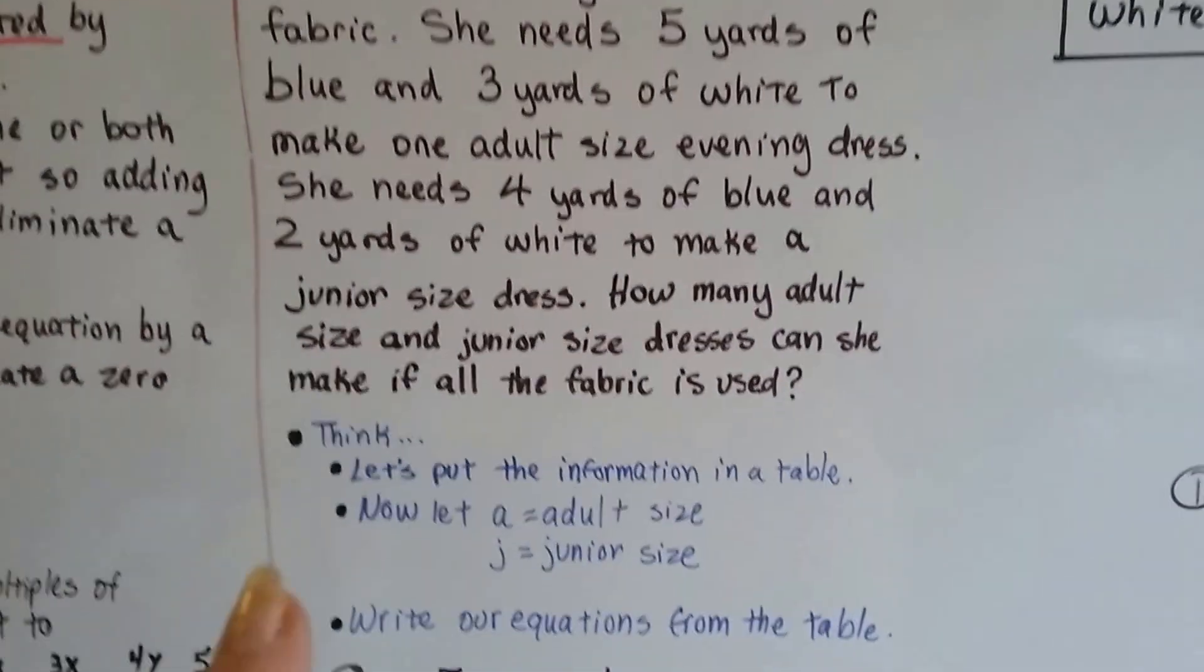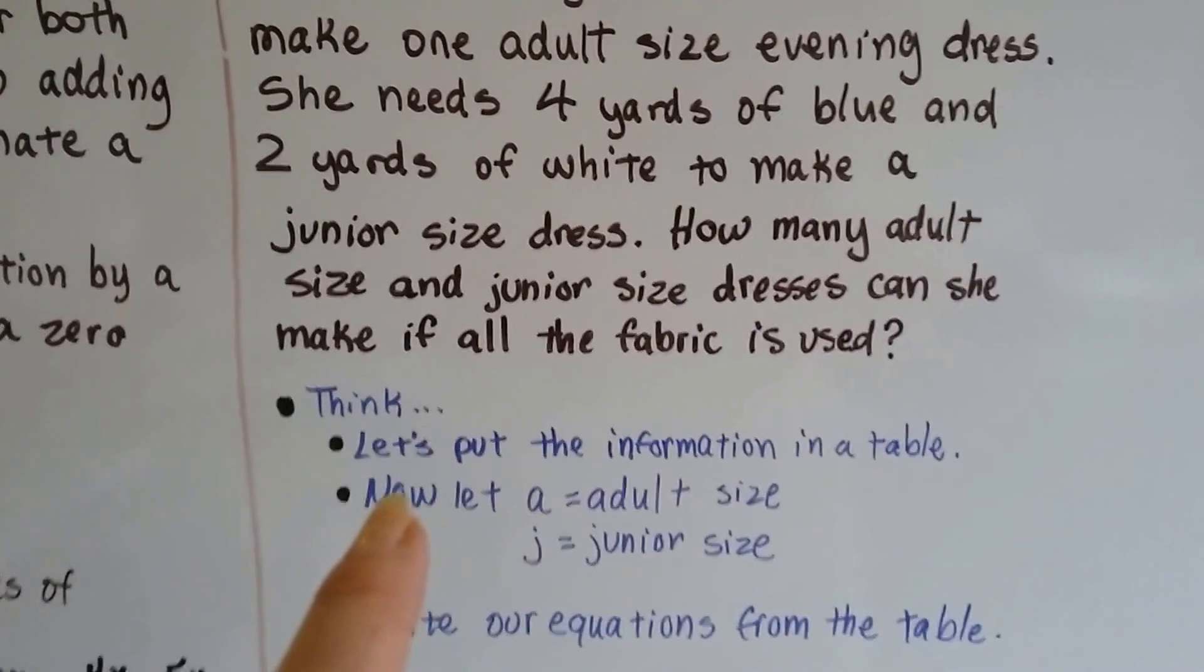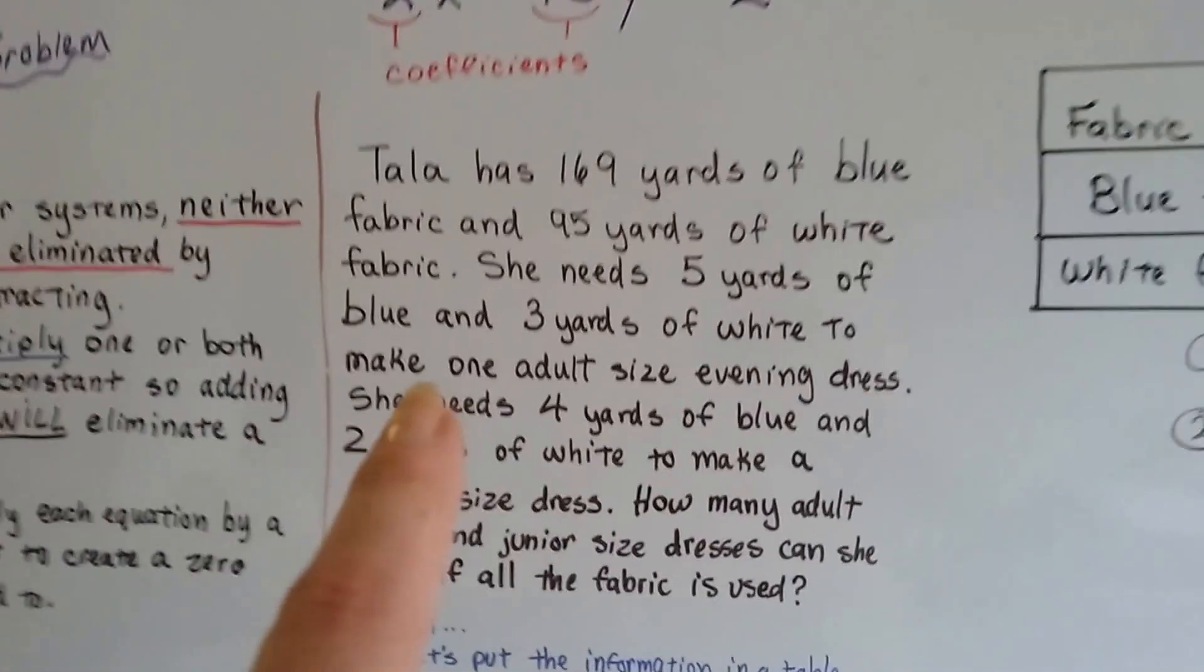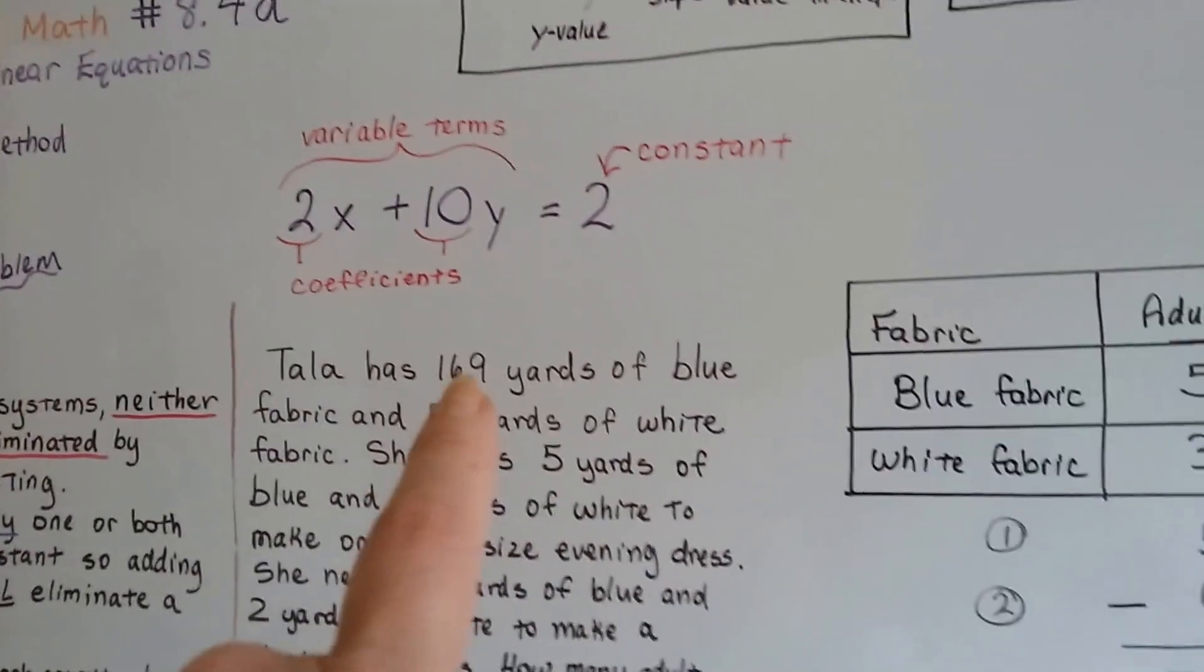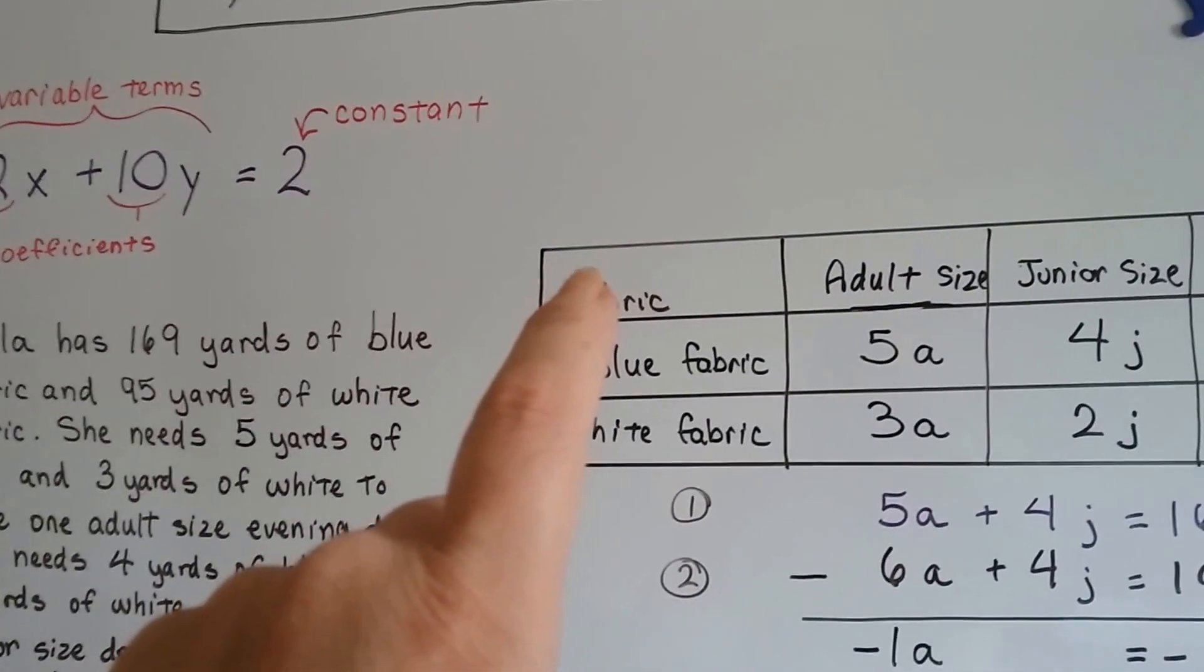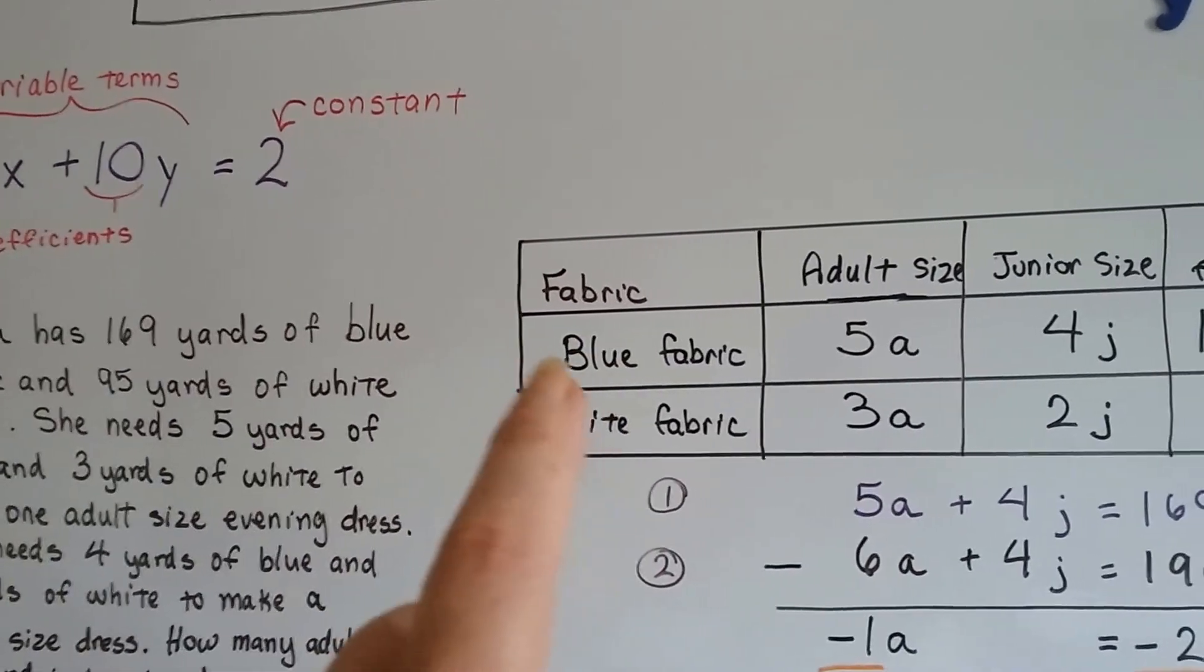So, the first thing we do is we think. Let's put the information in a table. That way it's organized. So, we know that she's got 169 yards of blue. So, we put a column for fabric and we put the blue fabric and the white fabric.